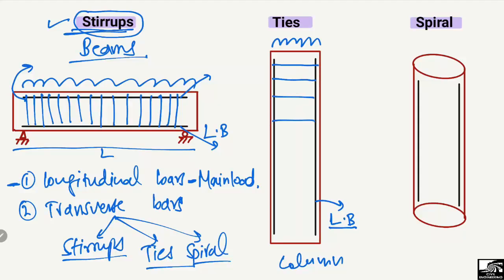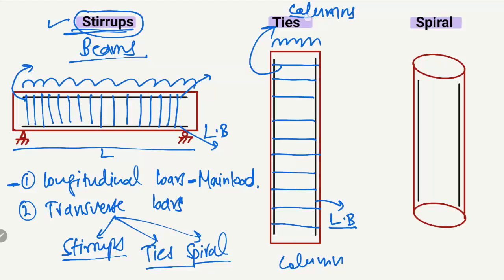The transverse reinforcement provided perpendicular to the longitudinal bars, running along the whole height of the column, is known as ties. When provided in columns, ties provide lateral resistance to loads such as earthquake or seismic loads and wind loads. They also confine the concrete. Their purpose is the same as stirrups, but when provided in columns they are called ties.